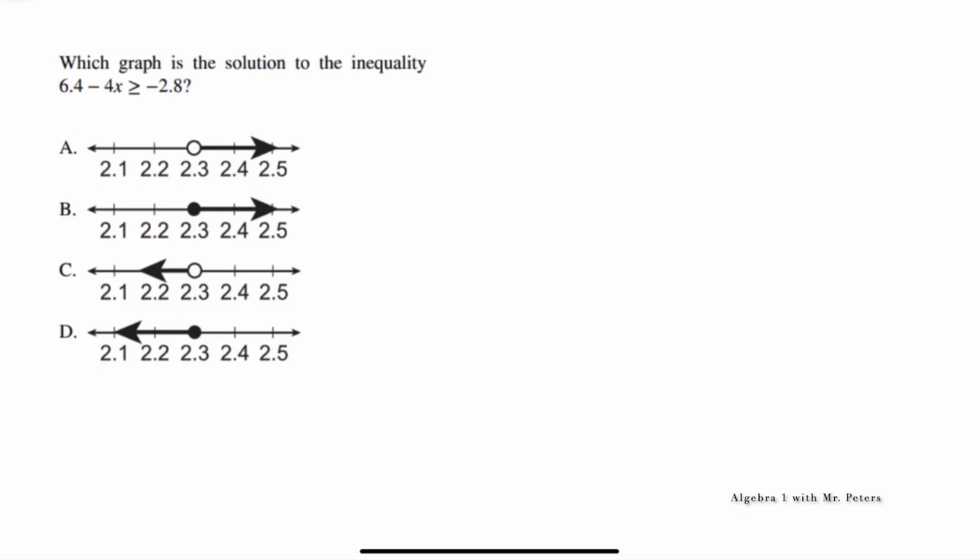In the second example, we're dealing with inequalities. After looking at the inequality symbol greater than or equal to, we could eliminate answer choices A and C because this should be a closed circle. Now, the first step to properly solve is subtract 6.4. So we have negative 4X is greater than or equal to negative 2.8 minus 6.4, which is negative 9.2. Now family, because we're dividing by a negative X, you have to flip your inequality sign. This is what they're betting on us to forget. So after we divide, we're going to have X is now less than or equal to 2.3. So our answer choice is going to be D. And like I said, using process of elimination is going to help us to get the correct answer more than likely.